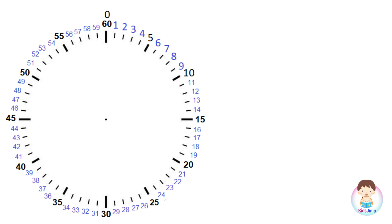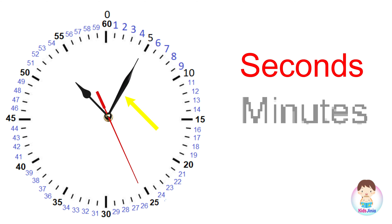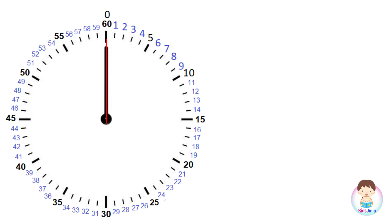Now let's see the design of the analog clock in detail. There are 60 marks in the clock face. The second hand, minute hand, and hour hand help us to read time. The seconds hand helps us to track seconds, the minute hand helps us to track minutes, the hour hand helps us to track hours.